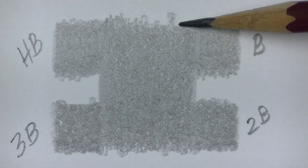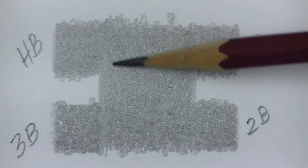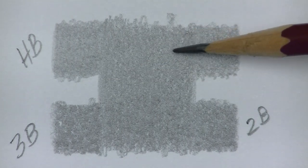The 2B looks closer, maybe a little bit slightly darker. It may fall somewhere between a B and a 2B pencil.